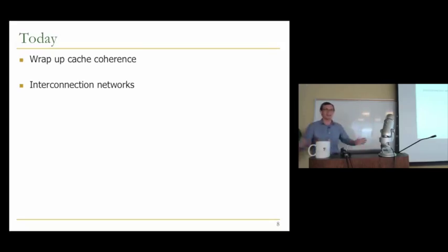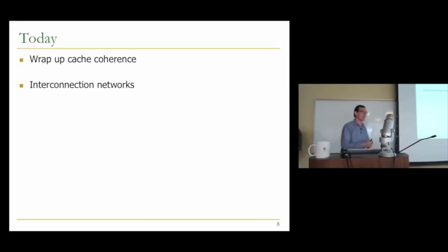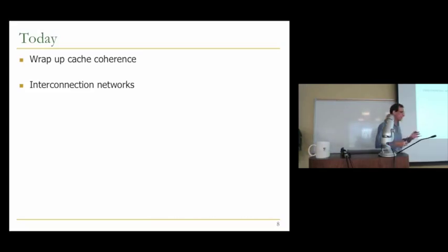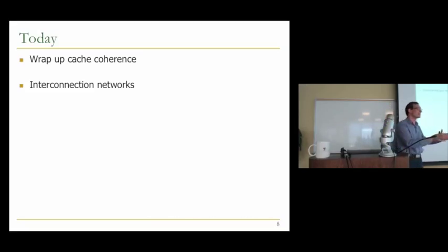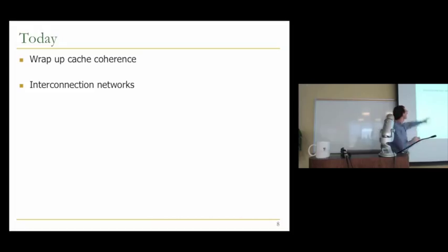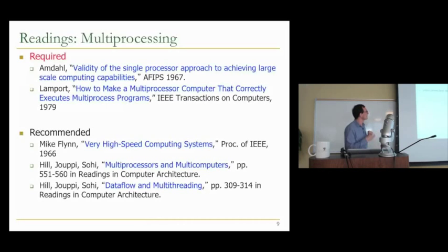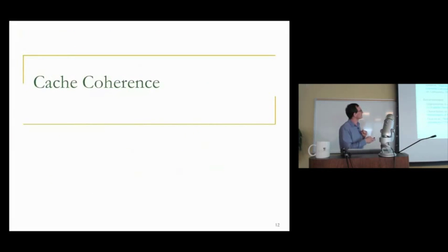Today we're going to wrap up cache coherence quickly, and then start and finish interconnection networks. I don't intend to spend more than one lecture on this, even though it's a huge topic. Communication is important. When we started computer architecture, we talked about three components of a computing system: computation, which we've covered early on; communication, which is today's topic; and storage or memory. We've covered storage and computation in a lot of depth — ILP extraction, SIMD, out-of-order execution, pipelining. But we haven't covered communication in a lot of depth.